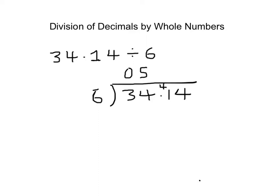6 into 41 is going to go 6 times with 5 left over because 6 6s are 36. Carry the 5 across. And 6 divided into 54 is going to go 9 times.